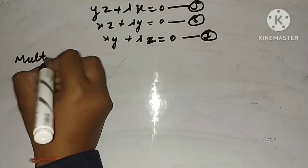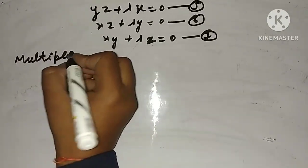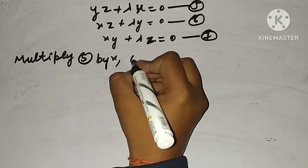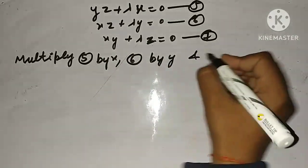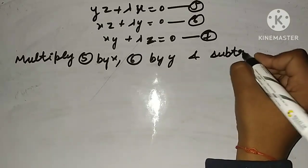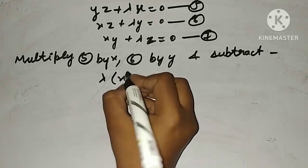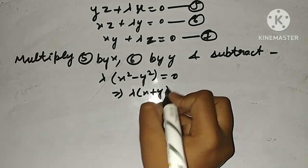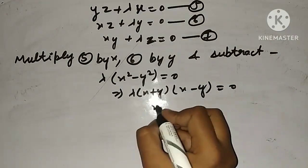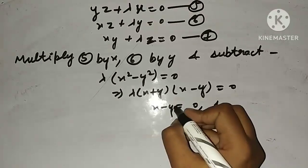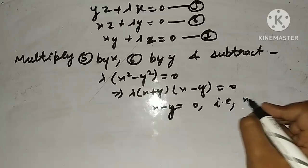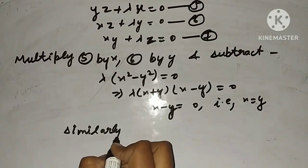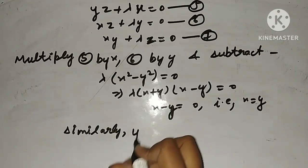From the equations yz + λx = 0 and xz + λy = 0, multiplying the first by x and the second by y and subtracting gives λ(x² − y²) = 0, implying λ(x + y)(x − y) = 0, so x − y = 0, that is x = y. Similarly, y = z.